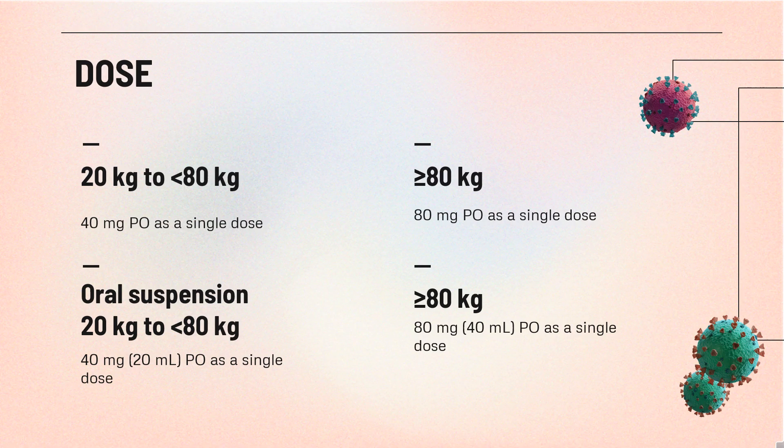Dosing for influenza — indications include acute uncomplicated influenza symptomatic for less than or equal to 48 hours, for otherwise healthy individuals or those at high risk of developing influenza-related complications, and post-exposure prophylaxis following contact with an individual who has influenza. Tablet dosing: 20 kg to less than 80 kg: 40 mg orally as a single dose; greater than or equal to 80 kg: 80 mg orally as a single dose.